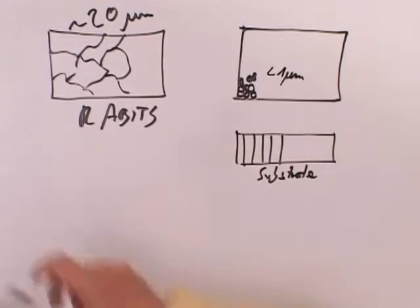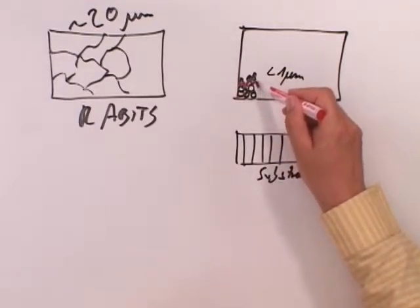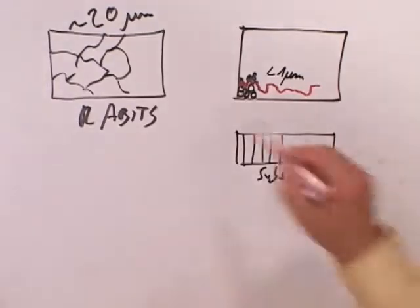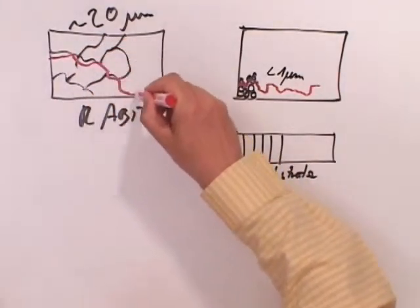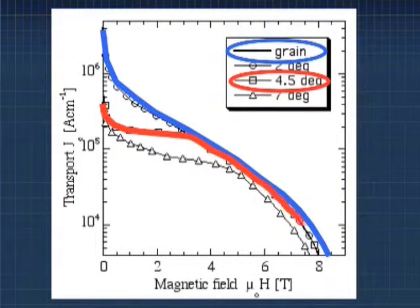This columnar structure has the effect that also the current has to follow an in-plane percolation path as it is necessary in the coated conductor based on RABITs. Let's now analyze the IV characteristics.